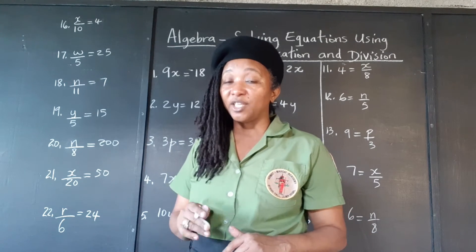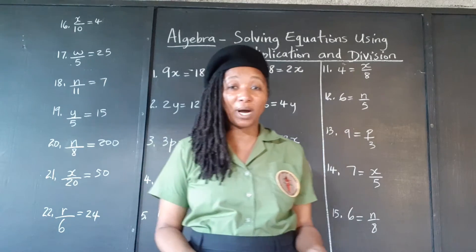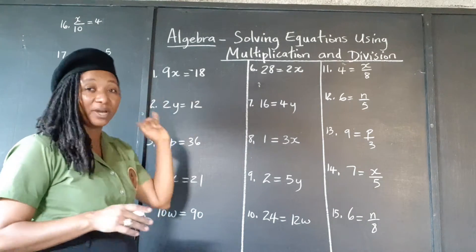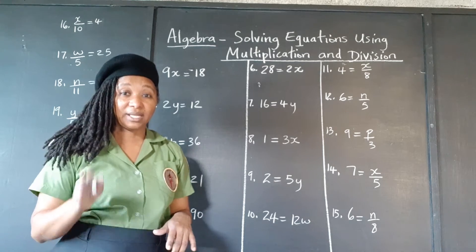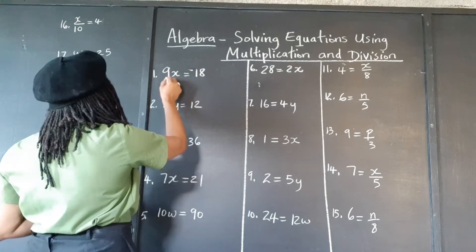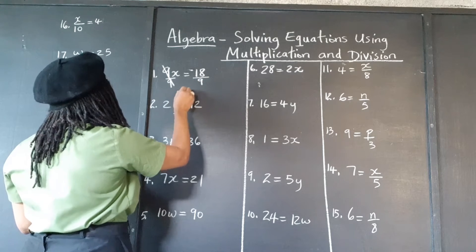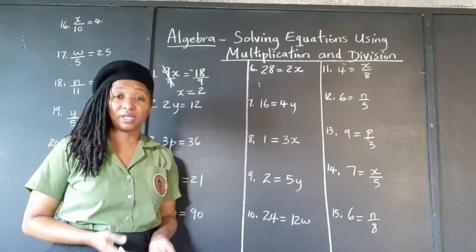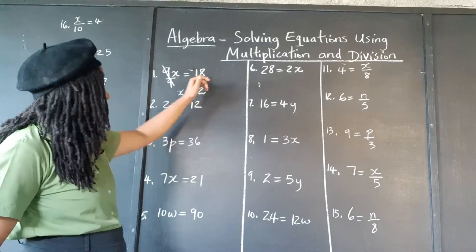The idea is just to have the variable by itself because we want to know what the variable is equal to — what's the value of x, what's the value of y. So we're going to follow that strategy: divide by the coefficient, the number that's in front of the variable, but we have to do it on both sides. Whatever we do to the left, we must do to the right. So we're going to divide by 9 to cancel out the 9, and divide this side by 9 as well. Finally, we just have x, and 18 divided by 9 is 2. We have solved our equation: x is 2.